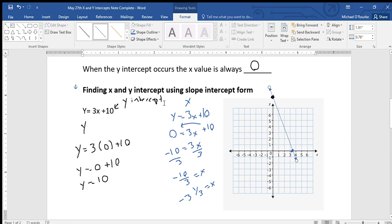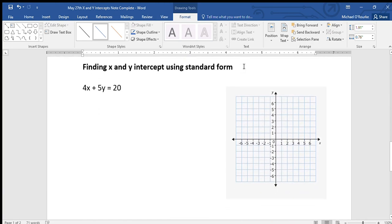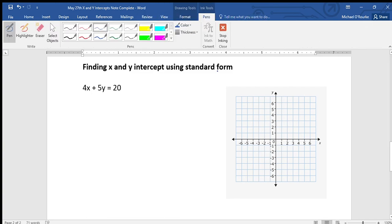So for slope intercept form, I just took that number for my y-intercept—we know how to do that. Then for the x-intercept, we just plugged in a value of zero for y, because every time there's an x-intercept, the value for y is zero. Let's try this one using standard form.